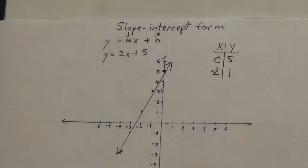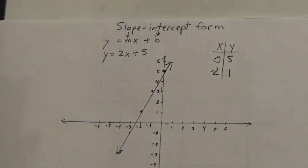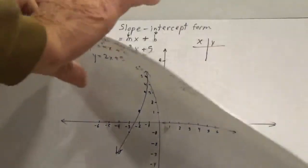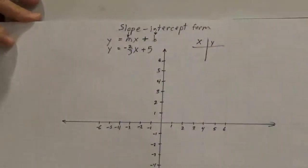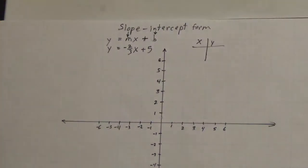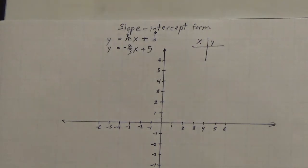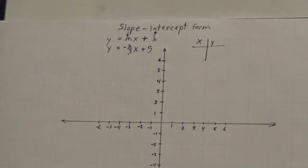So you see that we do have slope-intercept form. Let's look at some other examples. Here we have the equation y equals negative 2 thirds x plus 5.